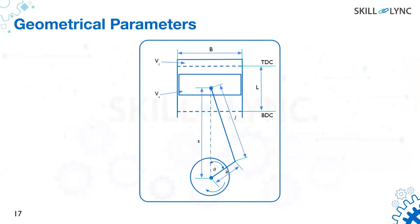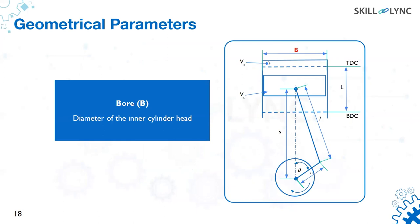Looking at a schematic diagram of a four-stroke IC engine, the bore is the diameter of the inner cylinder block. The stroke is the distance traveled by the piston — when the piston moves from 0 to 180 degrees of crank angle that constitutes one stroke, and from 0 to 360 degrees is two strokes.